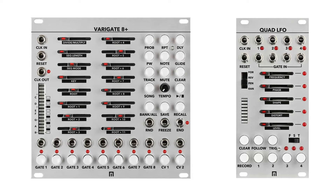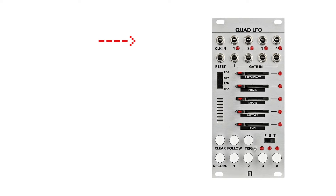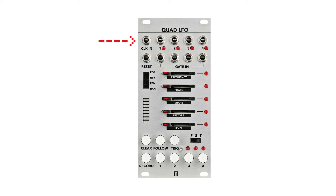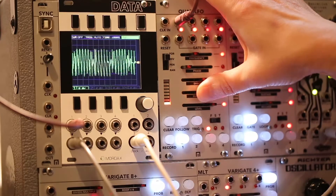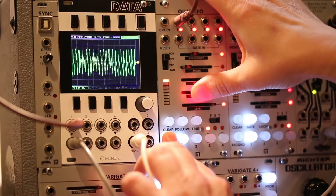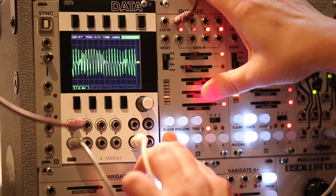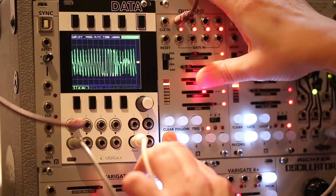Note: the Quad LFO sequencers need clock in order to run. In this setup, the Quad LFO is receiving clock from the Varigate 8 Plus because they are both on the same bus. Otherwise you'll need to insert a clock into the clock-in jack. To record your slider movements to the sequencer, hold the record button while you adjust sliders.